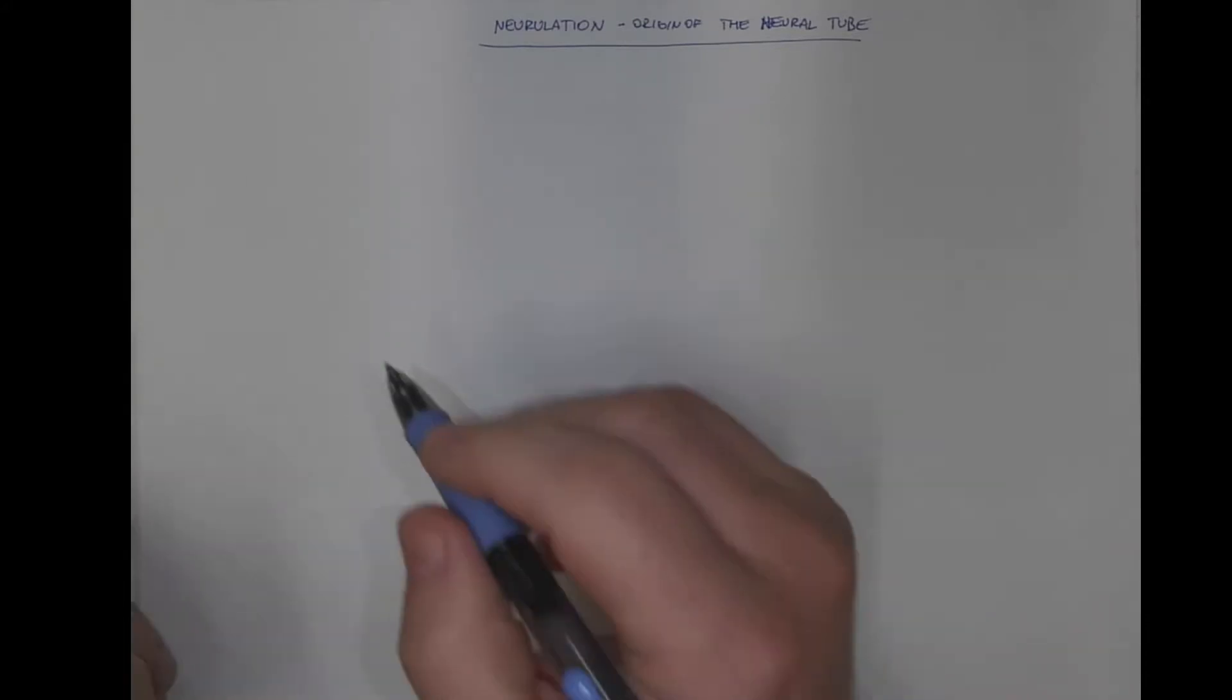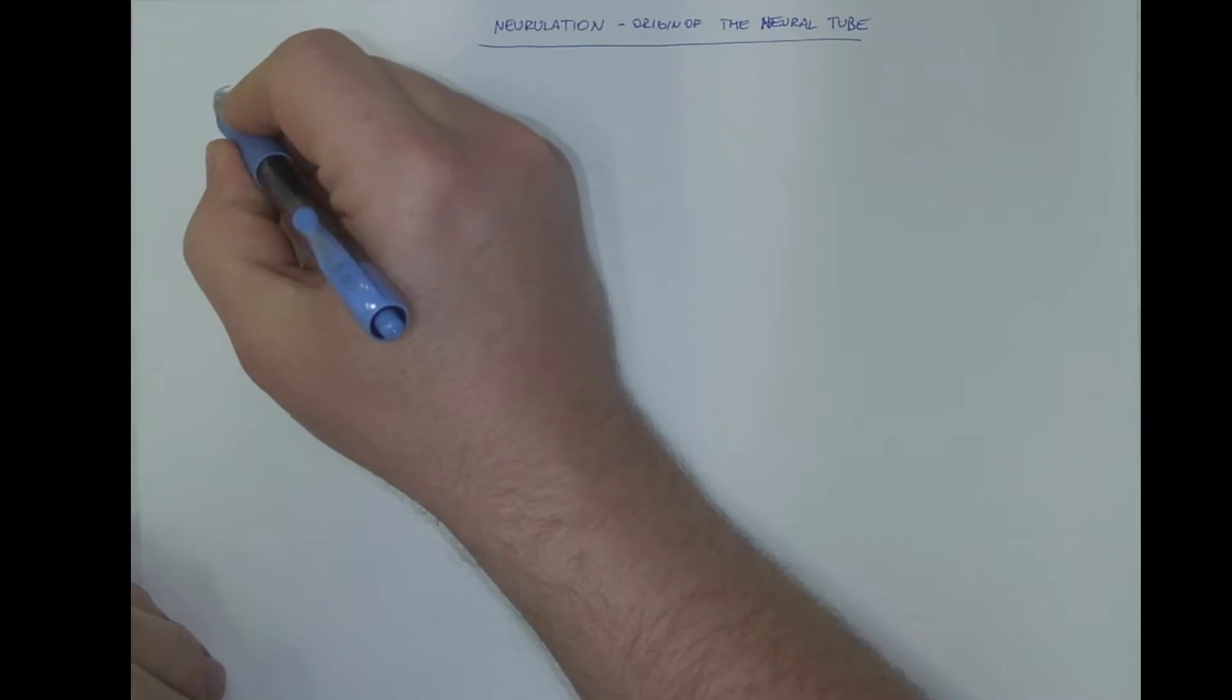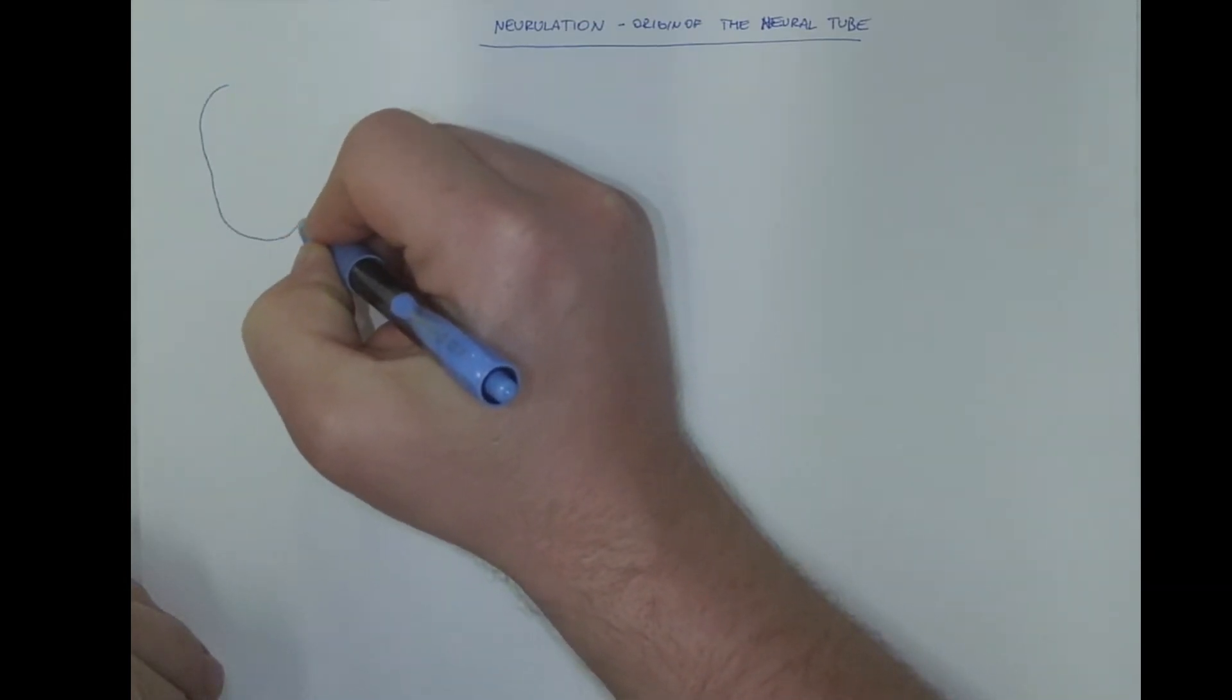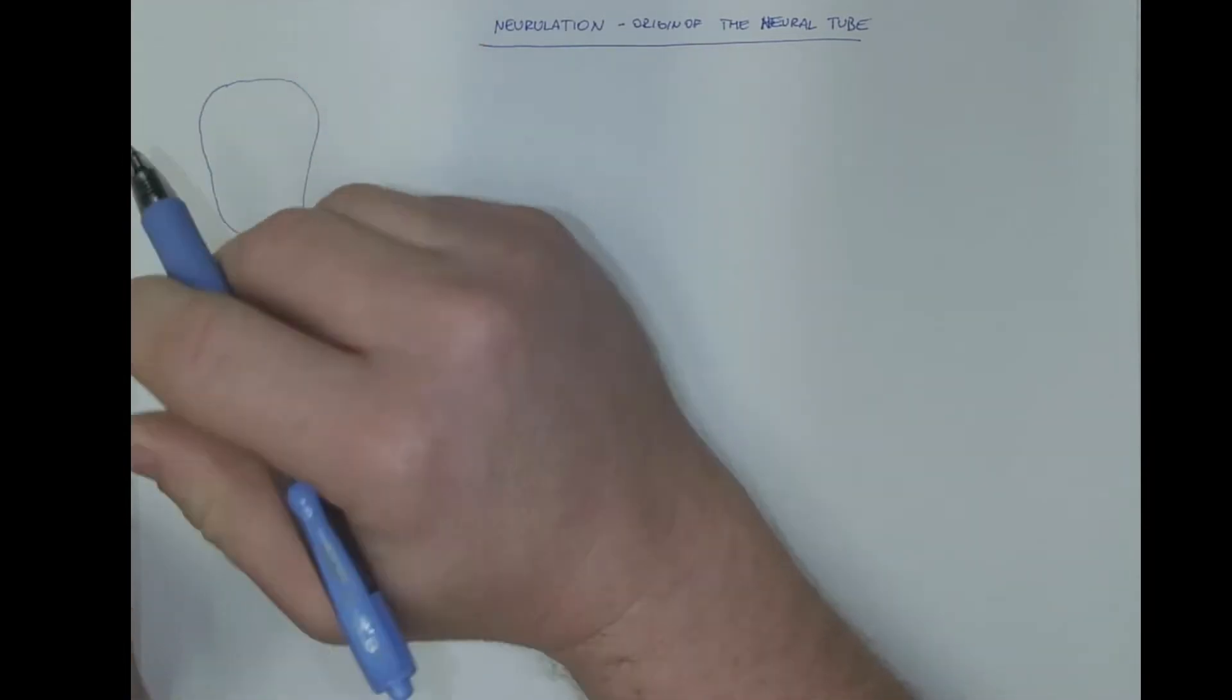Hello everybody! Let's explain briefly how a neural tube is formed. Let's make a scheme of a dorsal view on the embryo. So we are looking on the floor of the amniotic vesicle.